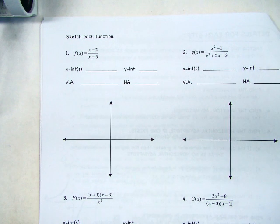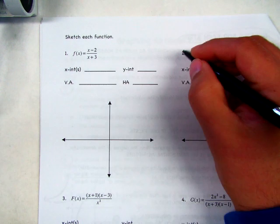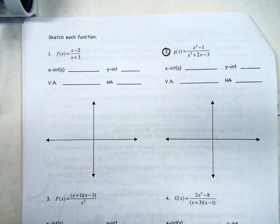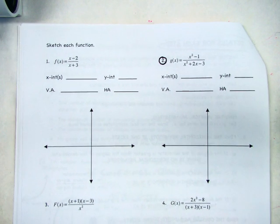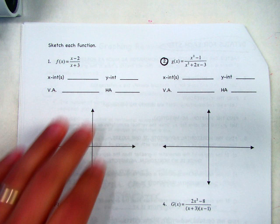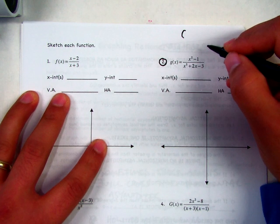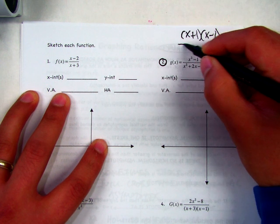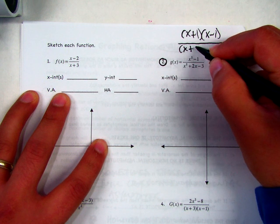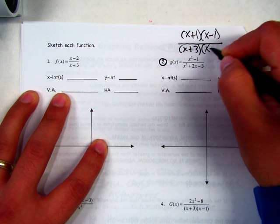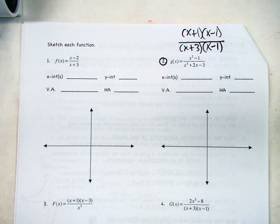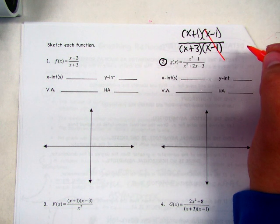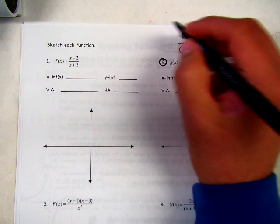Let's start with number two. Following our steps, first we factor everything. The numerator factors as x plus 1 times x minus 1. The denominator factors as x plus 3 times x minus 1. We have a common factor of x minus 1.